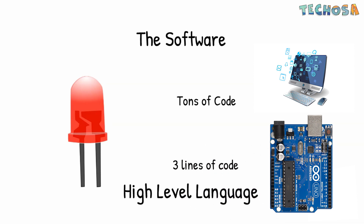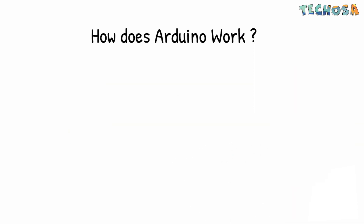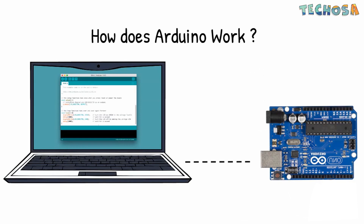In earlier times, we used to write tens of lines of code just to turn on an LED, but now with Arduino we can achieve the same result in just three simple lines of code. It is a high-level language that takes care of many coding details for us so we can focus more on the actual project. We can program different sensors and devices through Arduino's software and upload to the board.